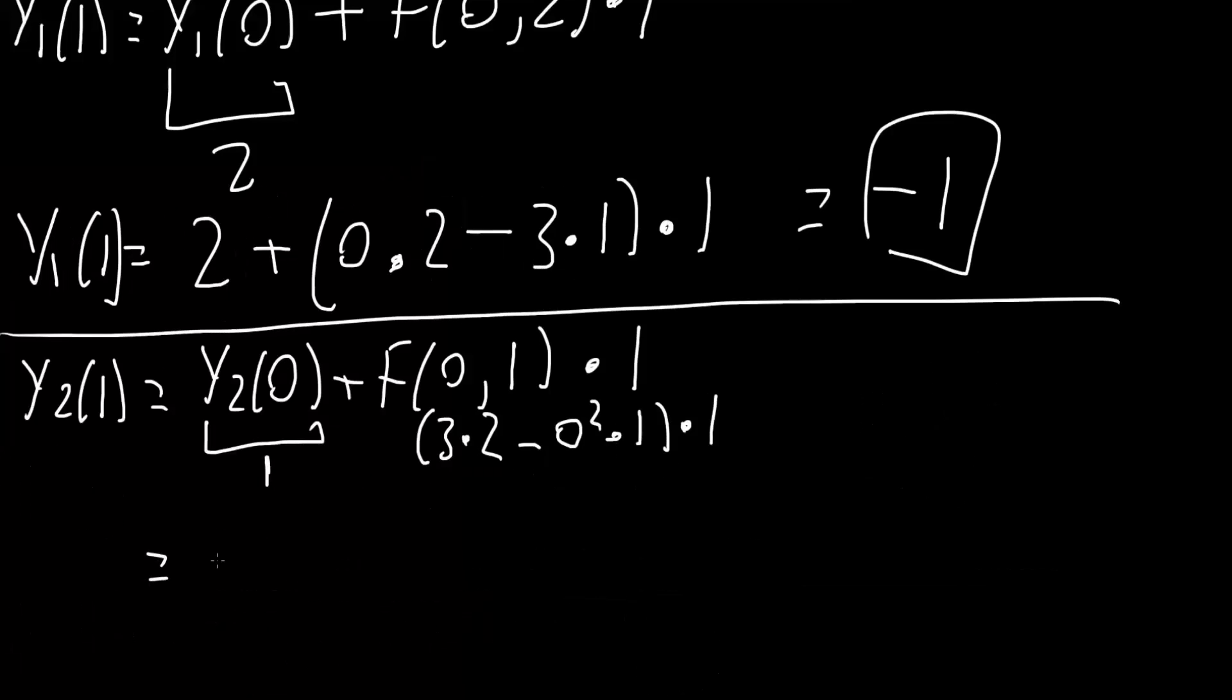So we would get, so this right here is 1, plus 3 times 2 is 6, minus 0 times 1 is 0, so minus 0 times 1. So we get 1 plus 6, and so the final answer for y2(1) would be 7, and that's all we need to do for this problem.